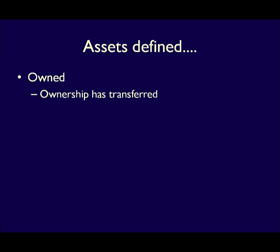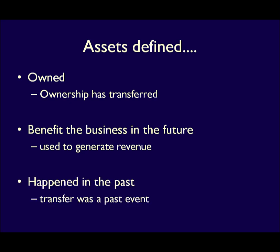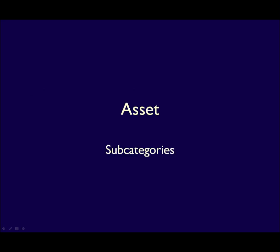When we record the activities of a business, we use these characteristics to determine if the transaction will affect the element or not. Let's start with assets. Assets have three characteristics: assets are owned, meaning the business has possession and ownership; they provide future economic benefit, meaning the business will use them to help generate revenue; and they are due to past events, meaning the transfer of ownership has already happened. To summarize, everything a business owns is an asset.